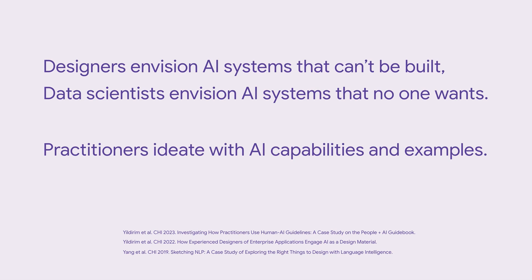One challenge is that designers struggle to understand what AI can do, and they tend to envision AI systems that can't be built. Data scientists, on the other hand, find it difficult to elicit what users need, so they tend to envision AI systems that no one wants. There's this gap. Recent work highlighted that AI capabilities and examples might help, but we know little about what these resources might look like and how they can be used to ideate AI concepts.